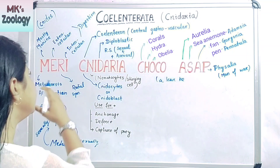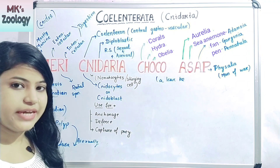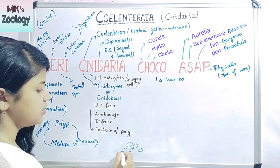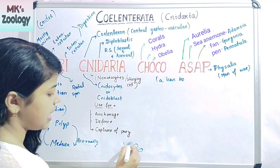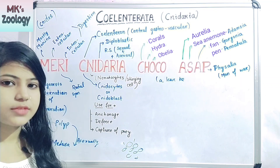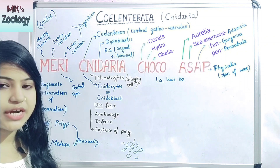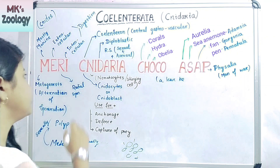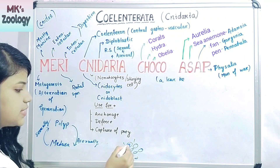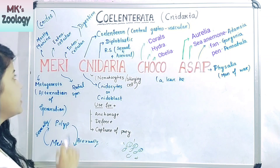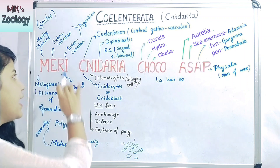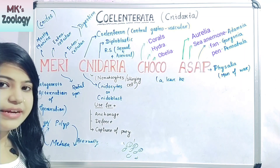The next letter E stands for extracellular digestion. Extracellular means the digestion takes place outside the cells. There is also another type — intracellular digestion, represented by the letter I — where digestion occurs inside the cells. So digestion in Cnidaria is of two types: extracellular and intracellular.